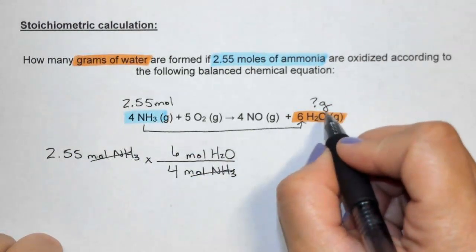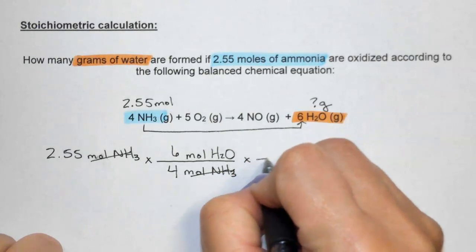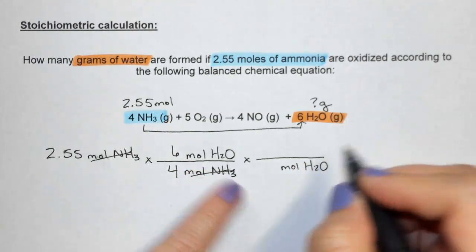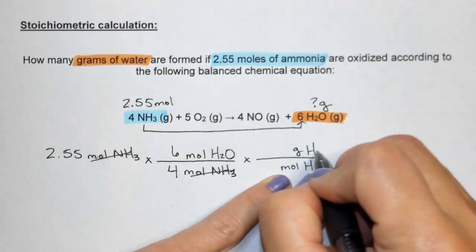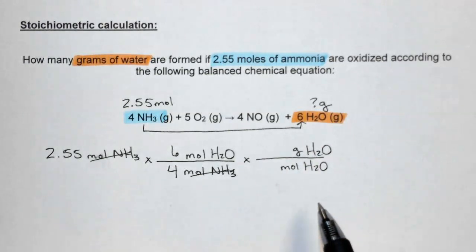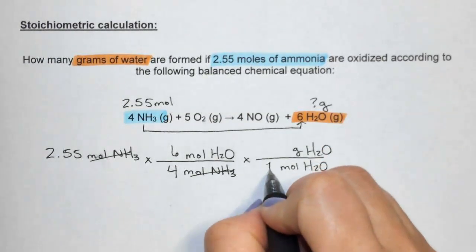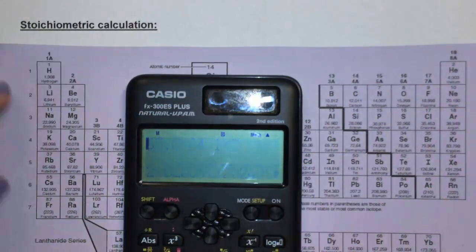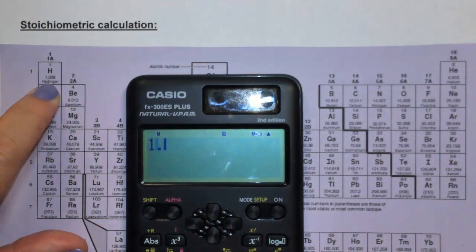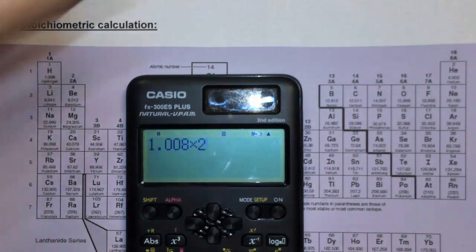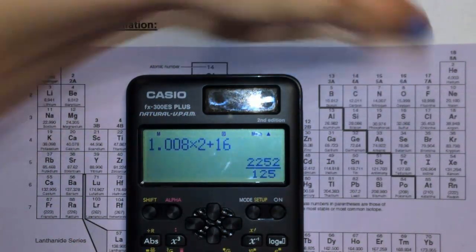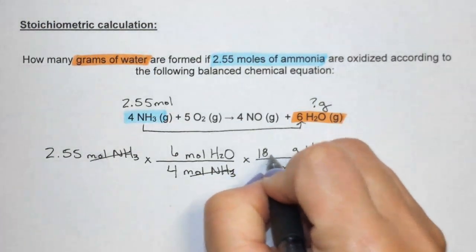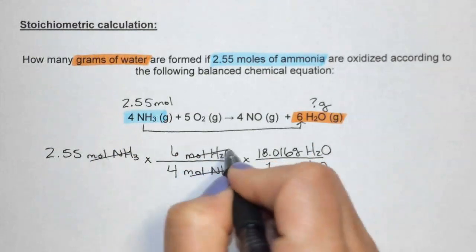We're going to take one more step. We're going to bring moles of water down here, and now we can switch to grams of water by going to the periodic table. One mole of anything equals the mass added up from the periodic table. Water is hydrogen, 1.008 times two, plus oxygen, 16, which equals 18.016. That's the mass of water. The moles of water have cancelled. I'm now at grams of water, which is what I want, so I can calculate my final answer.